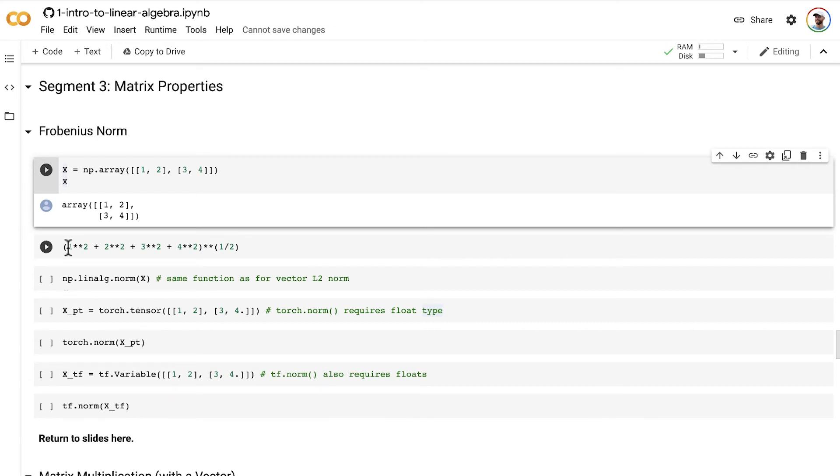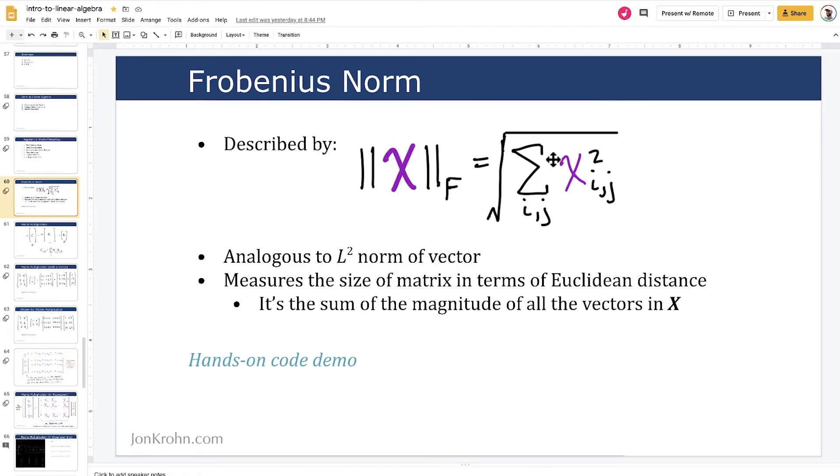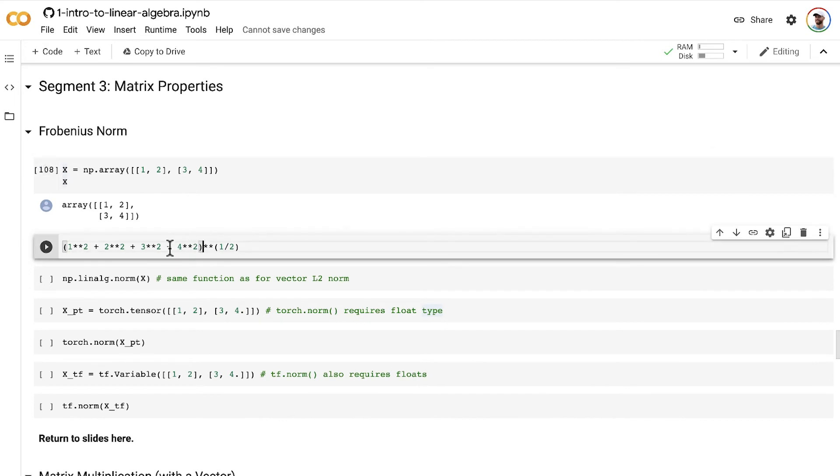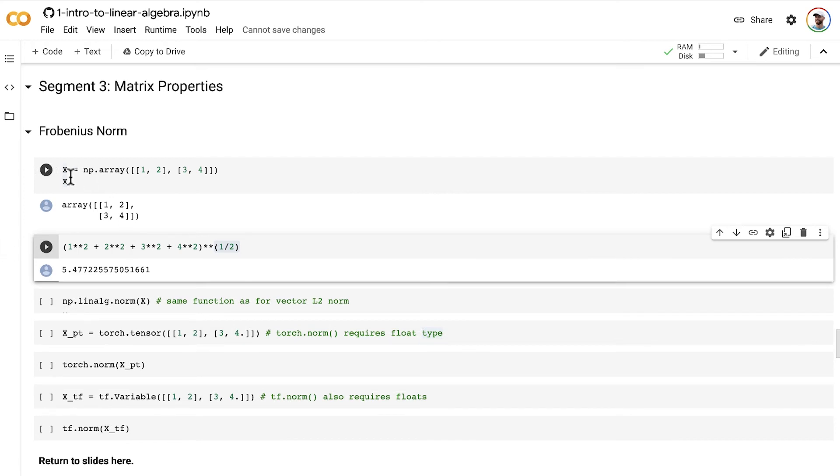To calculate the Frobenius Norm, just like in the equation, we square each of the elements, sum them up, and then take the square root. So let's do that here. Let's take each of the elements and square them, 1 squared, 2 squared, 3 squared, and 4 squared. Sum them all up, and then we can take the square root, and that gives us our result. The Frobenius Norm of this matrix X is 5.5.